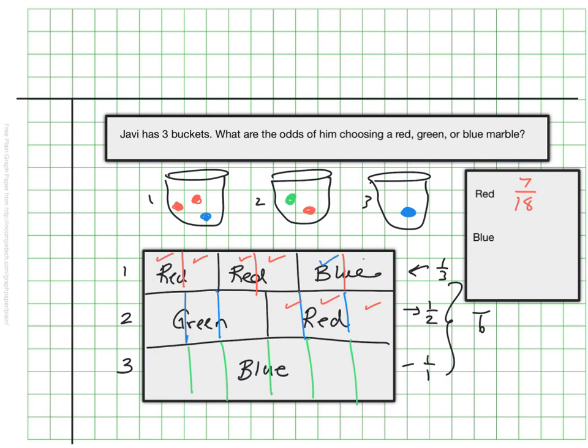For blue I can see two sections here that are blue, and then this whole area down here, all six pieces, are blue. So that means there's an 8 out of 18 chance of Javi choosing blue. And there's these three sections here that represent the green marble, so there's a 3 out of 18 chance of getting green.